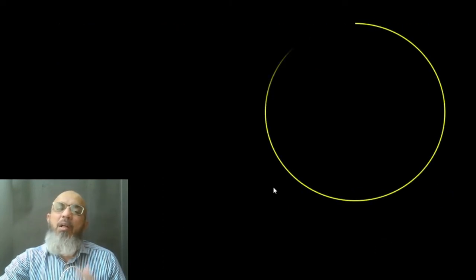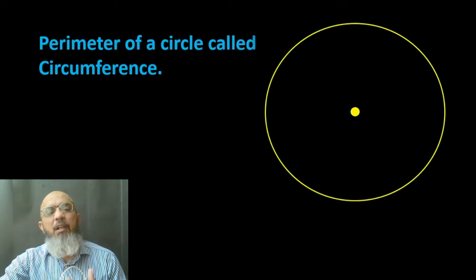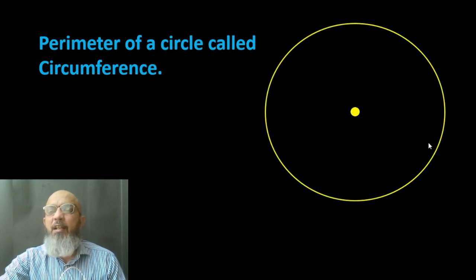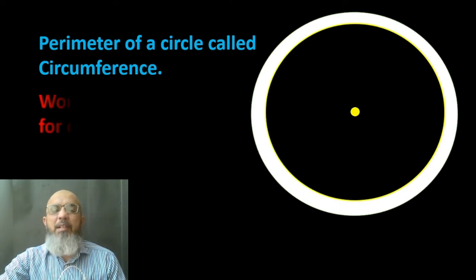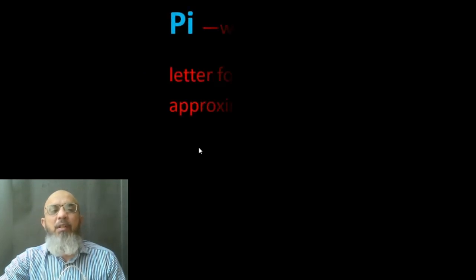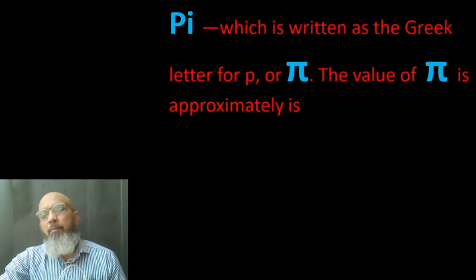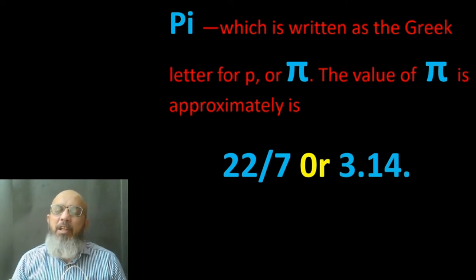Now, for a circle the perimeter is called circumference. The term perimeter is used for other geometrical figures, but when there is a circle we use the term circumference — the outer boundary of a circle. Area remains the same concept as in other geometrical figures. Now, what is pi? Pi is basically a Greek word.